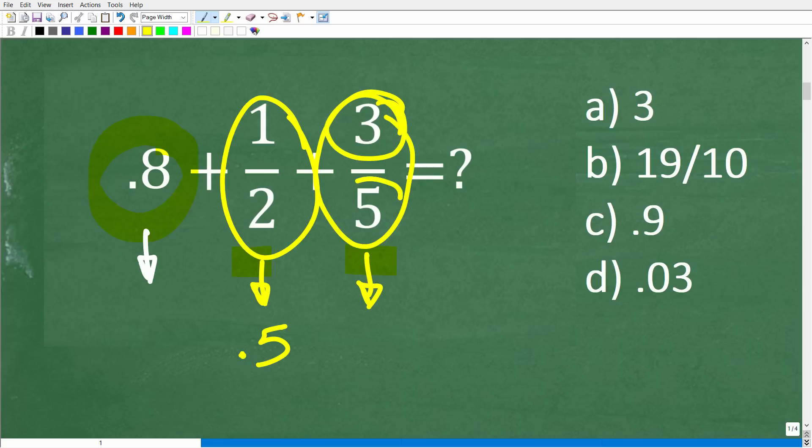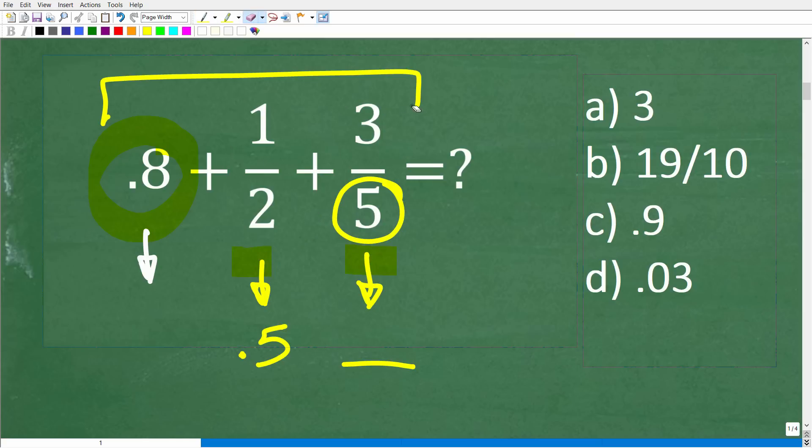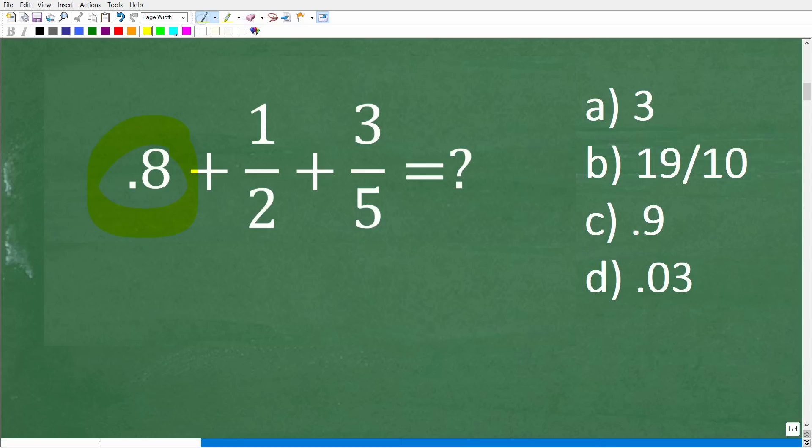We have to take 3 and divide it by 5 to get that answer, and then we have to add up all these decimals. I think it's a lot easier to solve this problem using fractions.